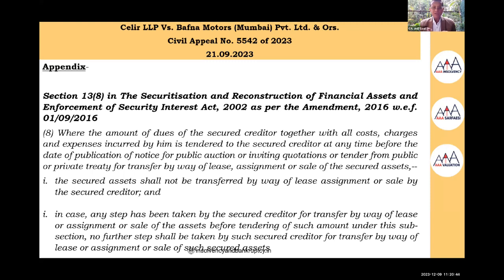Once the total amount is tendered, the secured asset shall not be transferred by way of lease, assignment, or sale by the secured creditor. If any step has been taken by the secured creditor for transfer before tendering of such amount, no further step shall be taken for transfer. In some cases, even before the public notice is given, some steps are taken by the secured creditor — this section says everything stops when the amount is paid. The key condition is that this must happen before the date of publication of the notice for public auction.